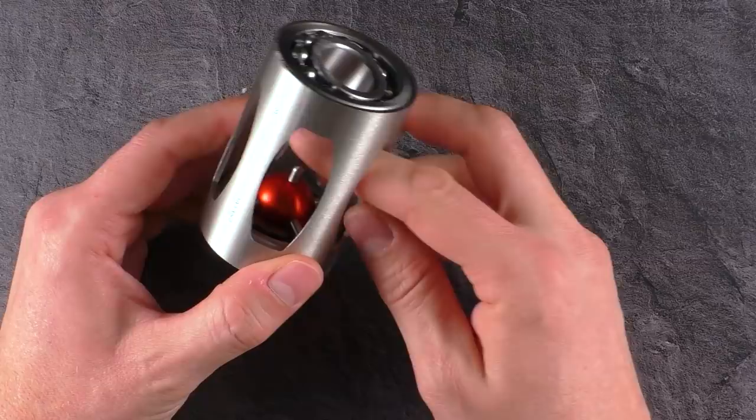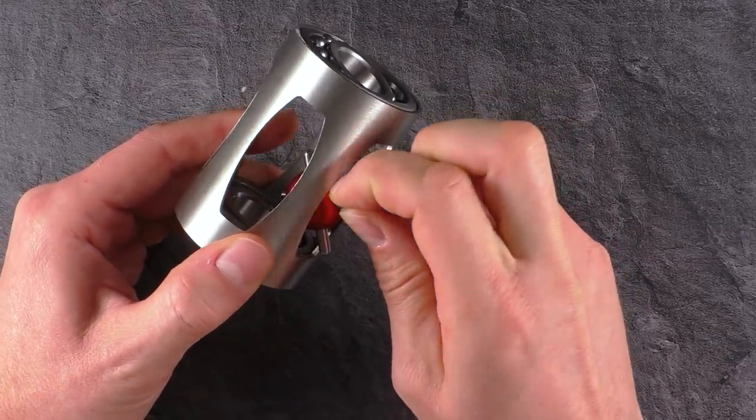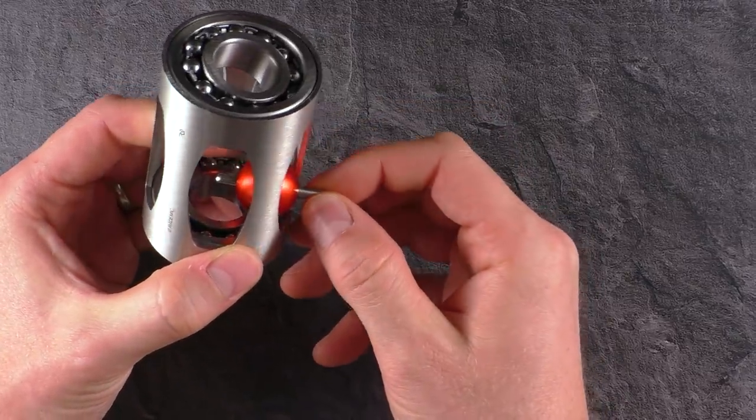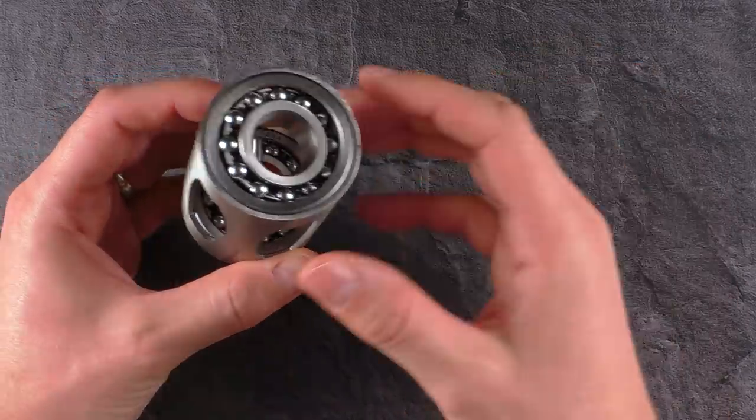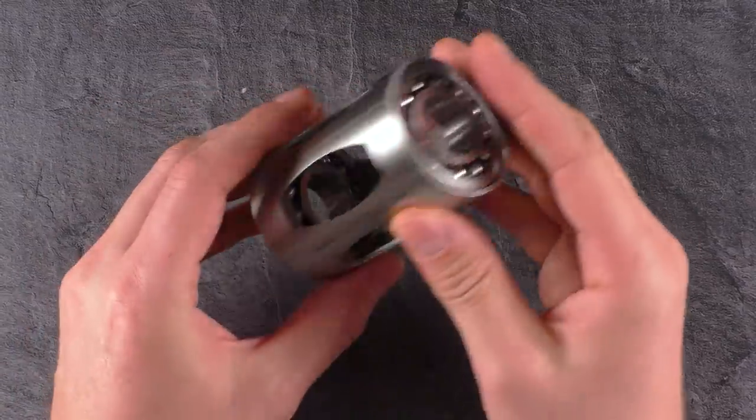It's a so-called Hedgehog puzzle. That means we need to somehow get this little hedgehog, this ball with the spikes, outside of its cage, and then put it back together. I already mentioned the bearings. There's one on the top and one on the bottom, but they are somehow special.